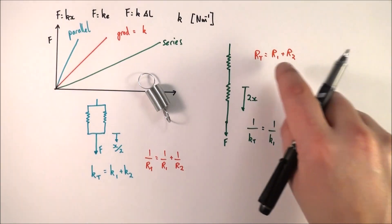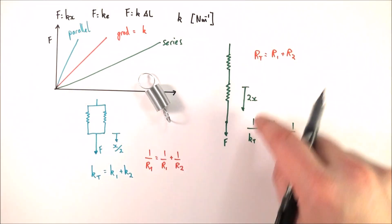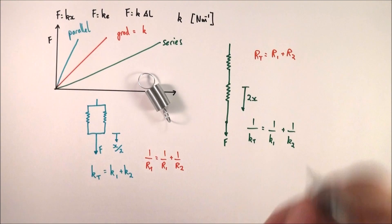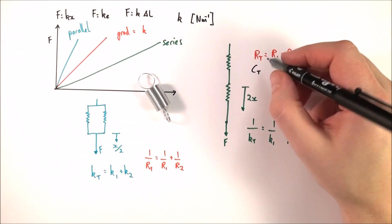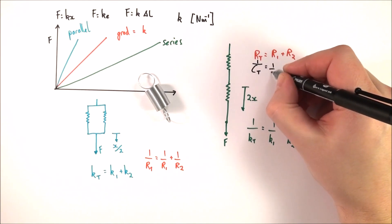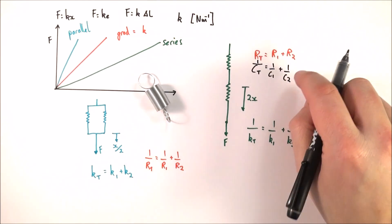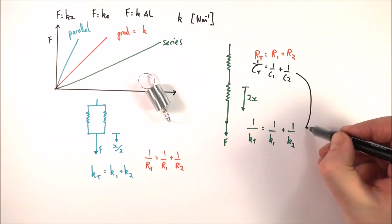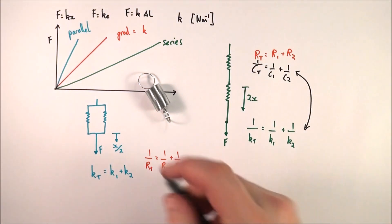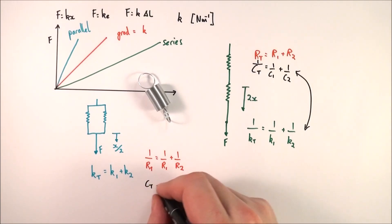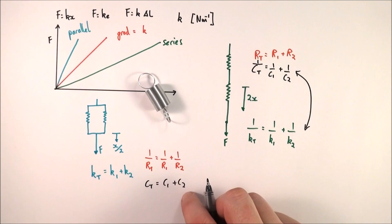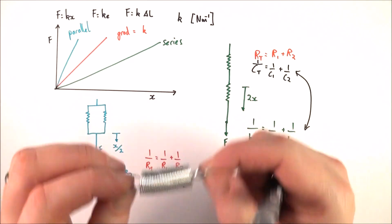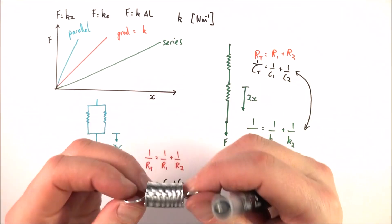For resistors in series, the equation is R1 plus R2 — which is opposite to the springs-in-series equation — and the parallel equations are also kind of reversed. However, there's another device called a capacitor. For capacitors in series: 1 over ct equals 1 over c1 plus 1 over c2 — a Year 13 topic. For capacitors in parallel: ct equals c1 plus c2. So the way springs behave in series and parallel is analogous to the way capacitors behave in series and parallel.